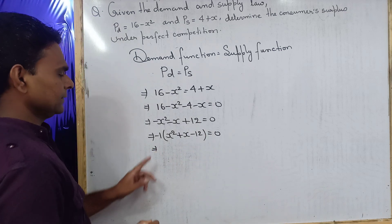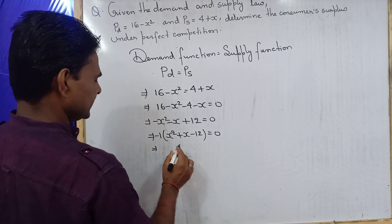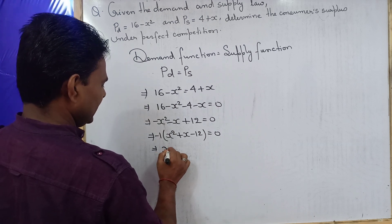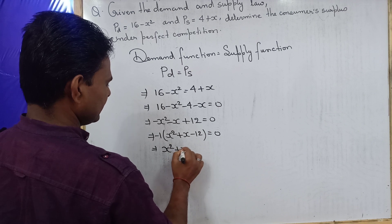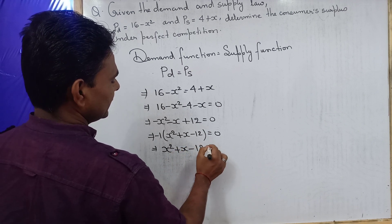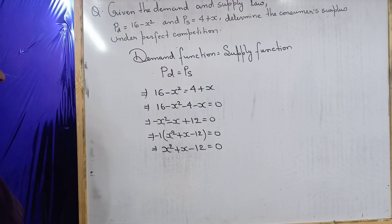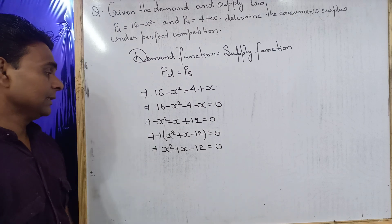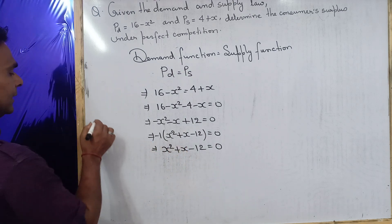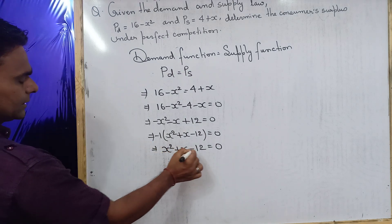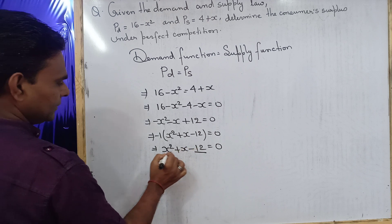If we take minus 1 as common, we are left with x squared plus x minus 12 equal to 0 inside the bracket. We have got a quadratic equation — you must have studied this in class 10 standard.